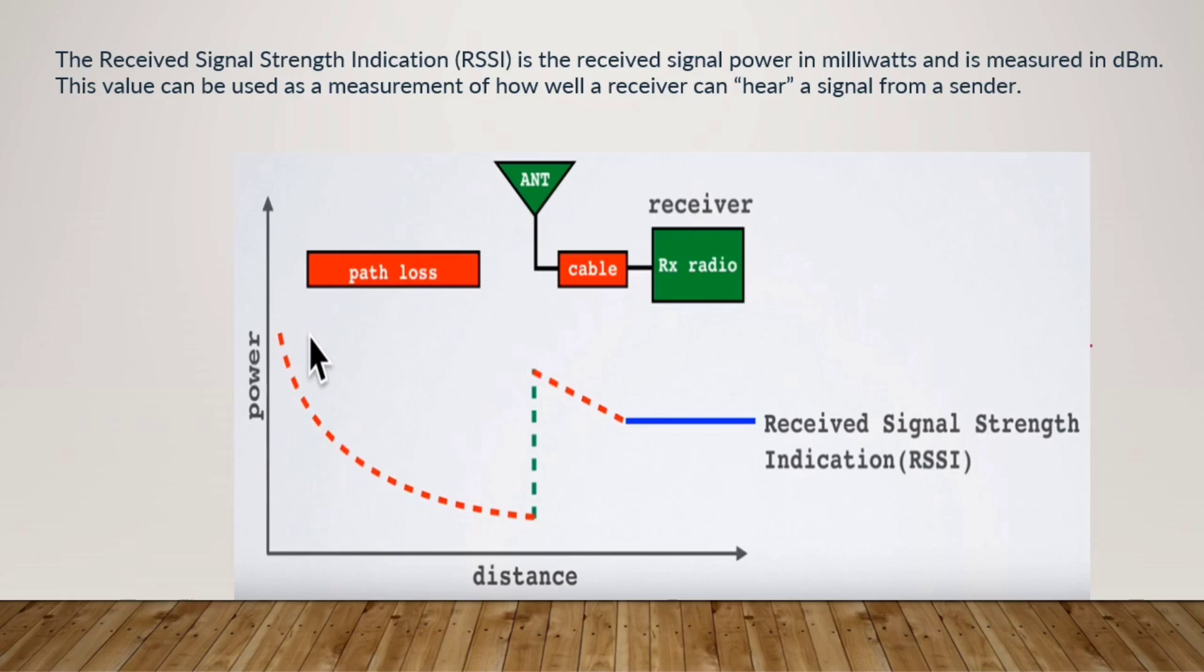As you can see in the diagram below, we have plotted power on the x-axis and distance on the y-axis. When the signal starts its way from a transmitter towards the receiver, it freely falls as it traverses the distance, and this is called path loss.